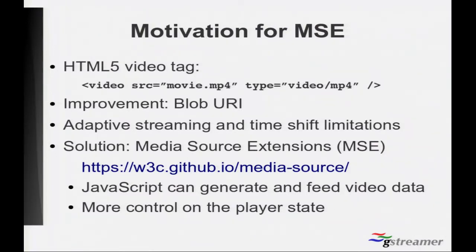But still, that's not enough, because in use cases such as adaptive streaming and time-shift, there are some limitations. Adaptive streaming is a technique which consists of selecting a specific version of the video with different quality depending on the network conditions. So if you are on a good network, it's going to choose a video with full quality, and if you are on a worse network, it's going to choose a video with lower quality. That quality change cannot be achieved only using the Blob URL. So there needs to be some kind of system to let JavaScript feed the data it consumes to the player, and then the player can play the movie. And this is what Media Source Extensions provides.